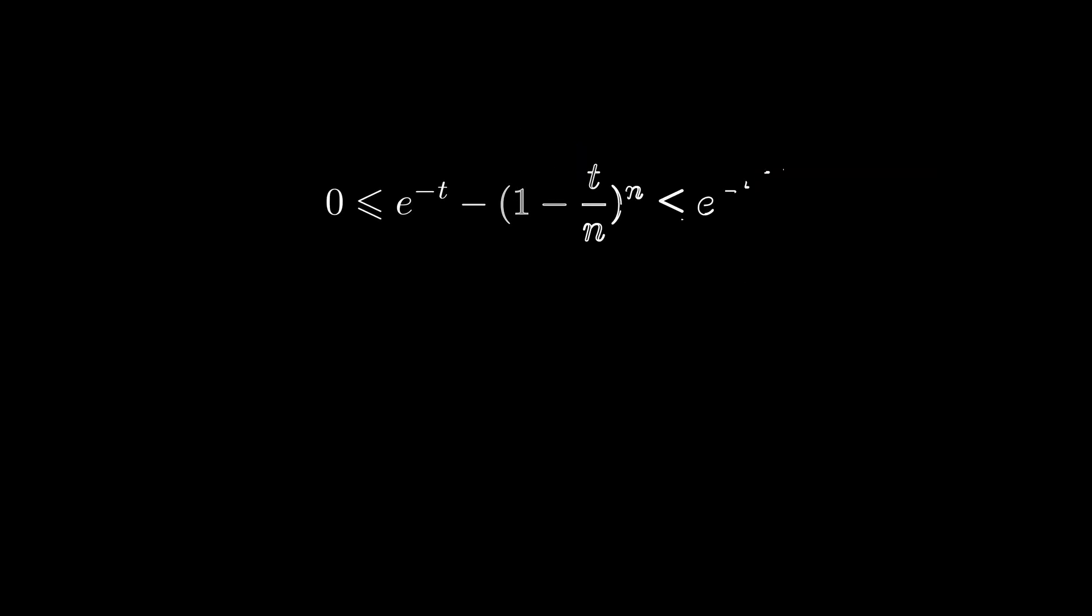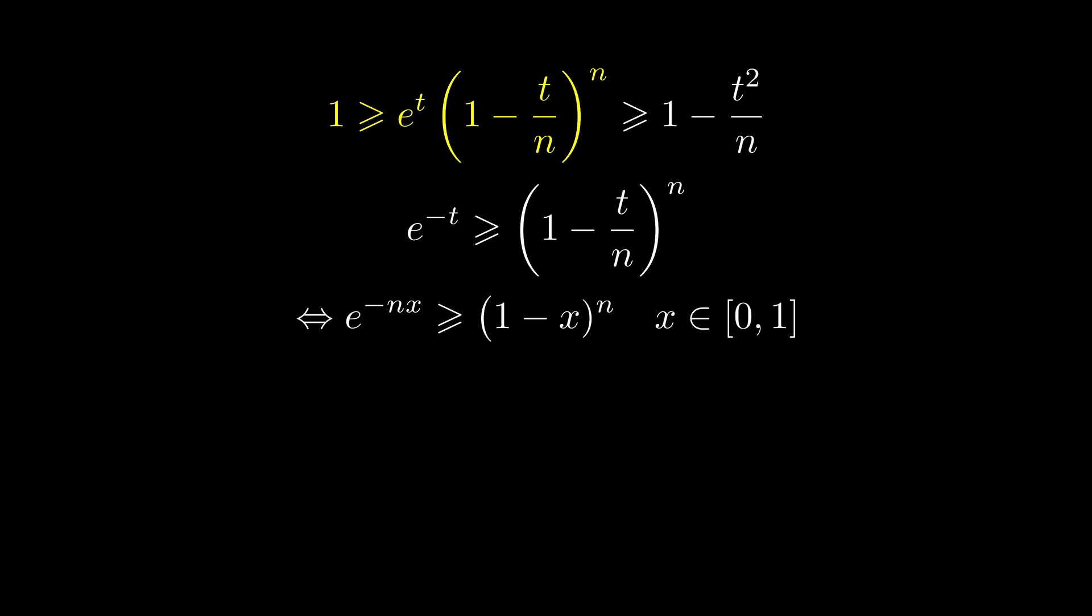First, let's do some basic manipulations. Nothing too fancy here. Our goal is to prove that the last row is true. Let's focus on the left-hand side. First, let's rewrite 1 as e to the power of t times e to the power of negative t. Now we need to prove that e to the power of negative t is always no less than its most common limit expression.